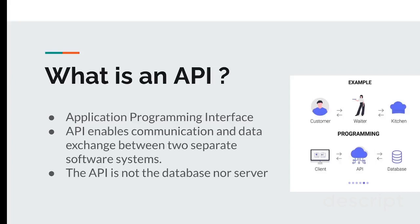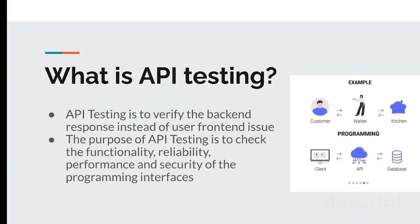That's a very simple example of how API works. Now let's see API testing in Cypress. What is API testing? API testing is to verify your back-end response instead of the user front-end interface. It means instead of entering standard input/output in the front end, you use software to send calls to an API endpoint, and the API makes the request. We verify the response as well as the request. Cypress comes into the picture when it needs to verify the API request and also the response.